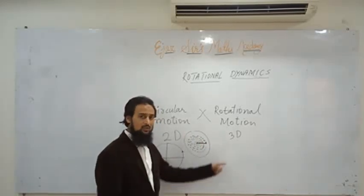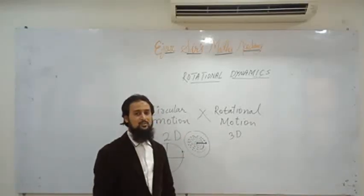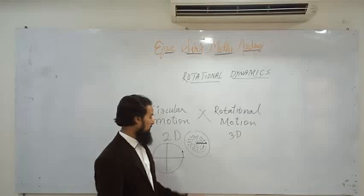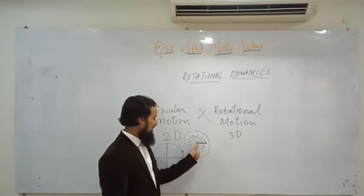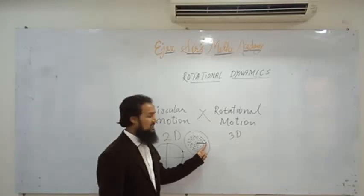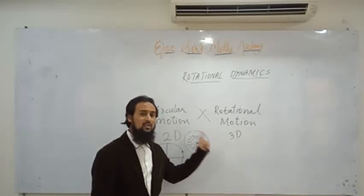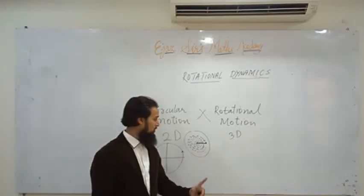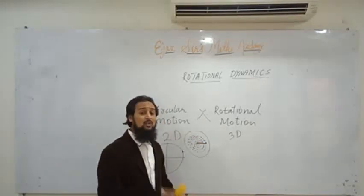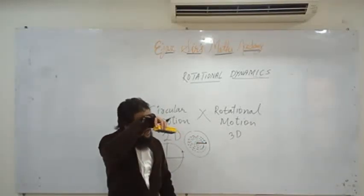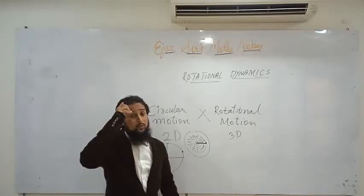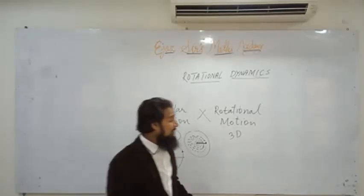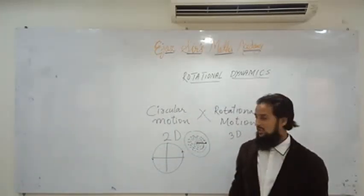So particles 1, 2, 3, 4, 5, 6, 7 — all particles are performing circular motion. But if you see the hand of the clock as a whole, that motion is called rotational motion. I hope you can see the difference between rotational motion and circular motion.